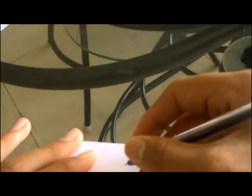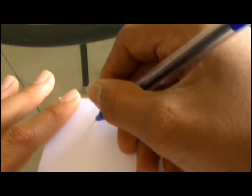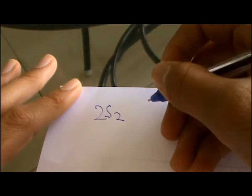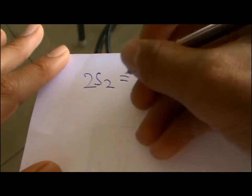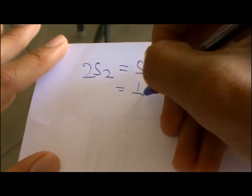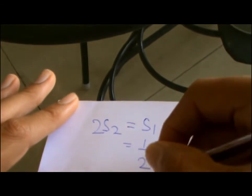So hey guys, I'm back with the solution. Where we left off last time, we found that 2S2 is S1. But S1 was one by two. So S2 will be one by four.